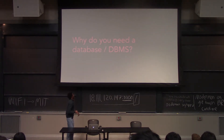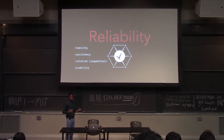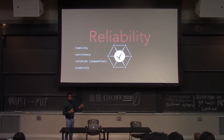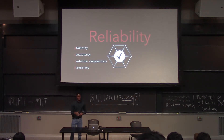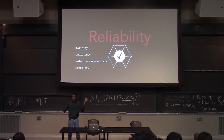Why do you need to use a database? One reason is reliability. Databases obey this principle called ACID — it's an acronym. The A stands for atomicity, which means that each database transaction either happens or doesn't happen. If you're saving a hundred different things inside your database through your DBMS, either all one hundred things get saved together or none of them get saved.